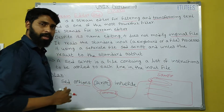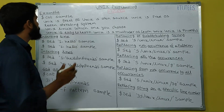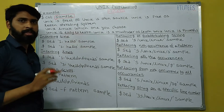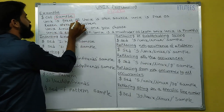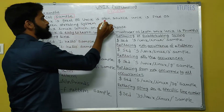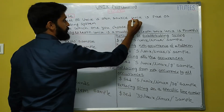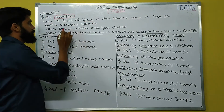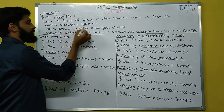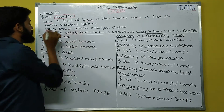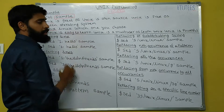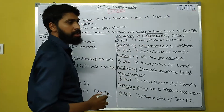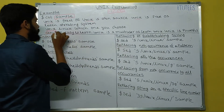Now let us discuss with some examples. The sample file contains: 'unix is great OS', 'unix is open source', 'unix is free OS' — here unix appears three times in lowercase — 'learn operating system', 'unix, linux, which one you choose?', 'unix is easy to learn', 'unix is a multi-user OS', 'learn unix', 'unix is powerful' — so four times unix in the last section.